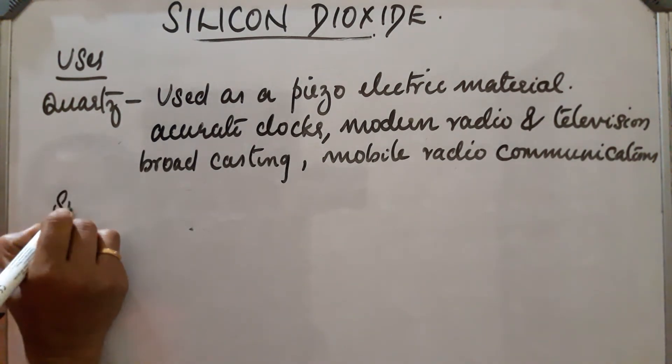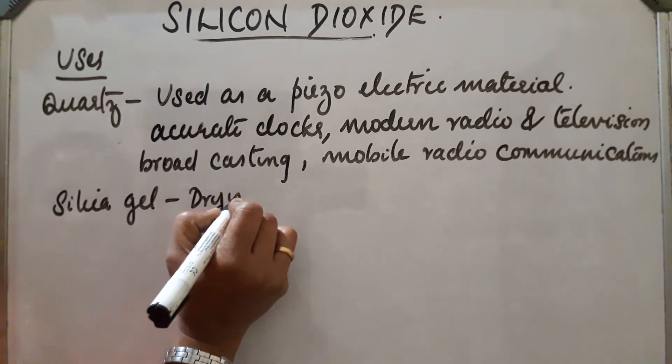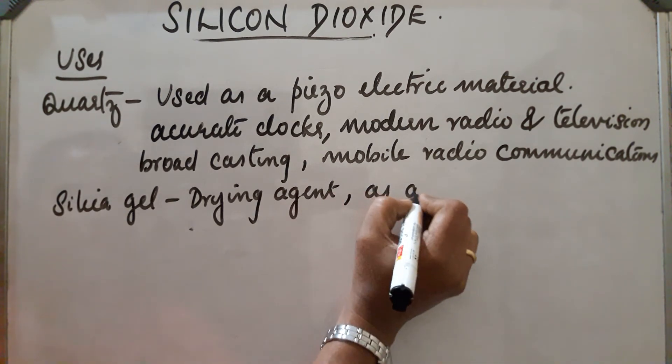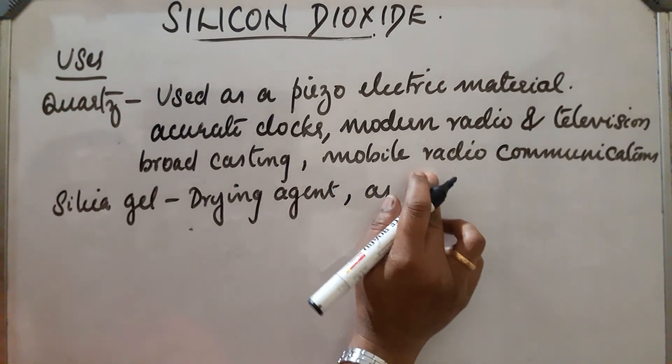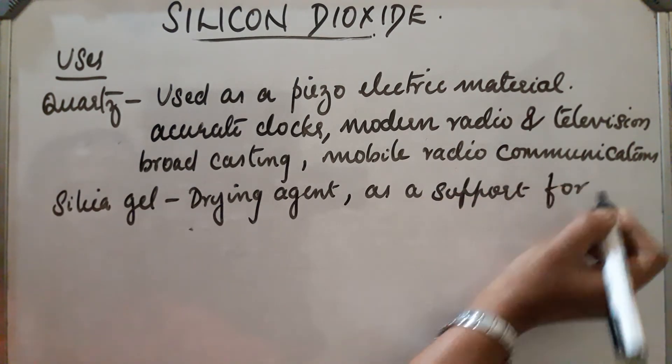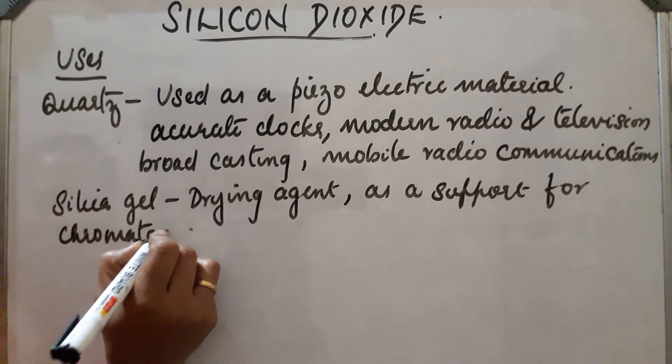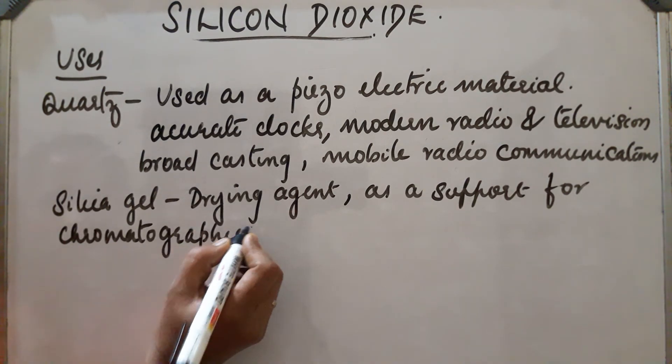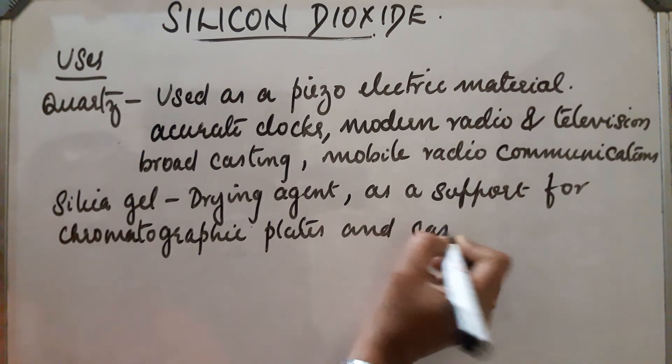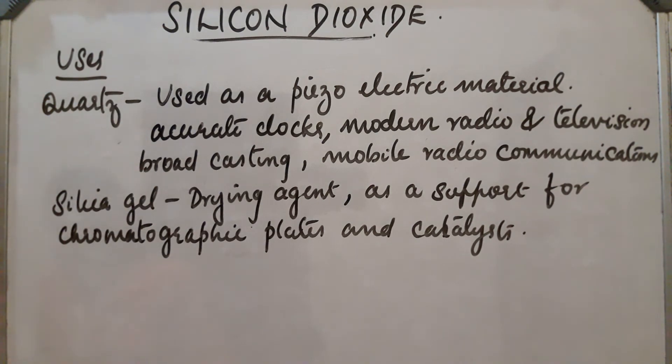Next, silica gel. Uses of silica gel: silica gel is used as a drying agent. It is also used as a support for chromatographic plates, used as a support for chromatographic plates and catalysts. So used as a support.